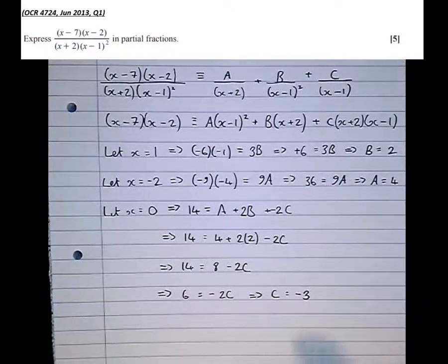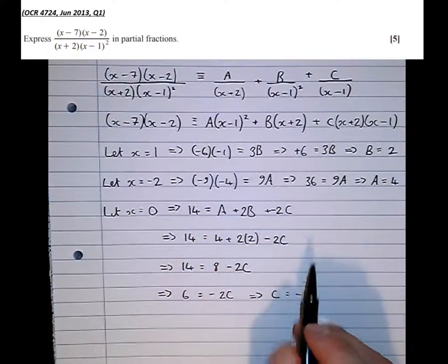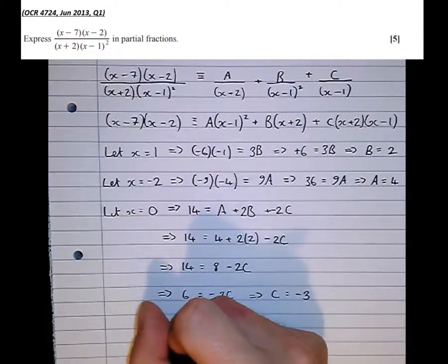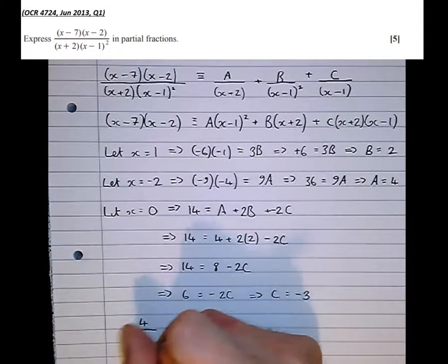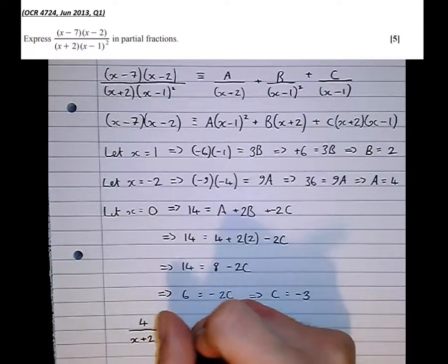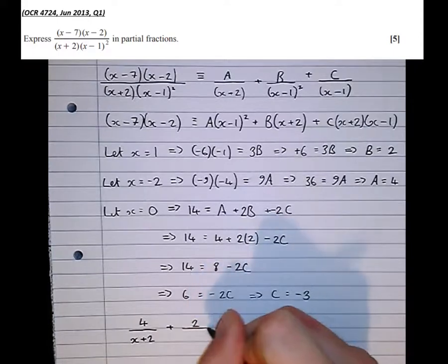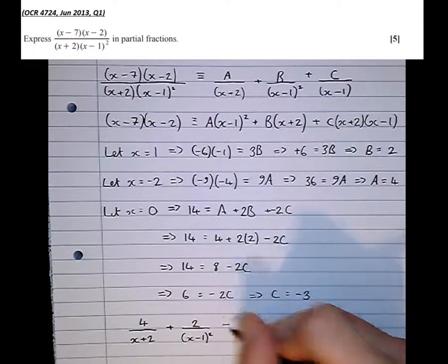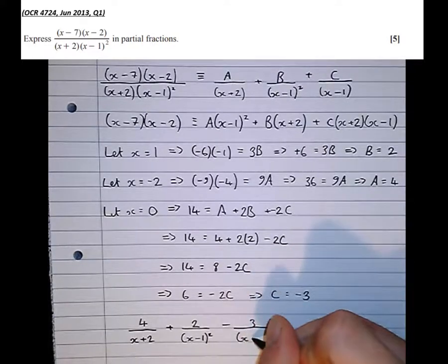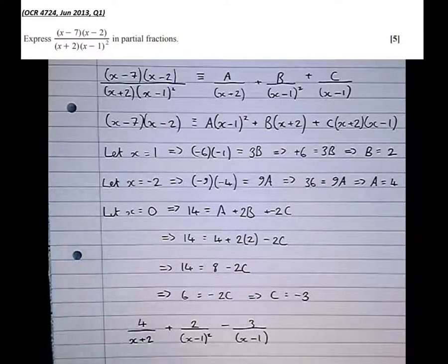Therefore, concluding, the partial fractions that we want are 4 over x plus 2, that's a over x plus 2, plus b, which is 2, over x minus 1 squared, then minus 3 over x minus 1. There's the answer.